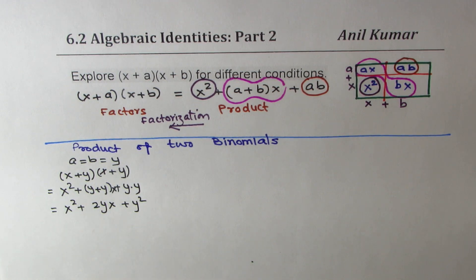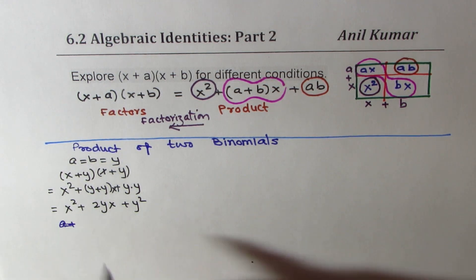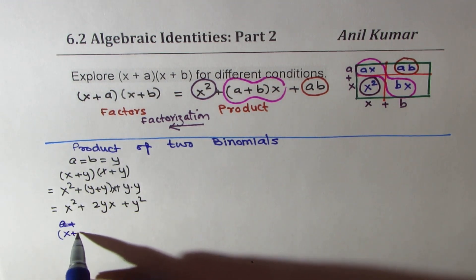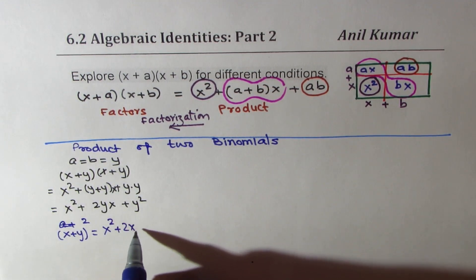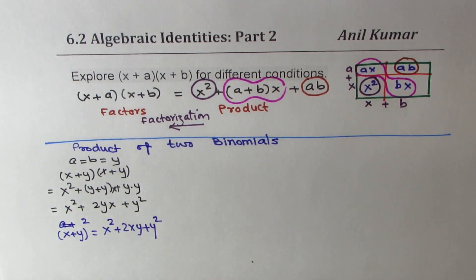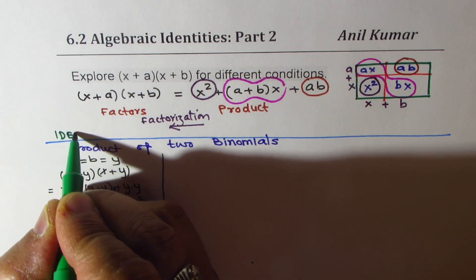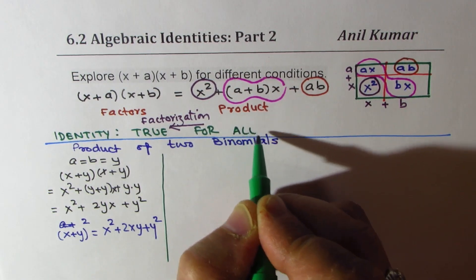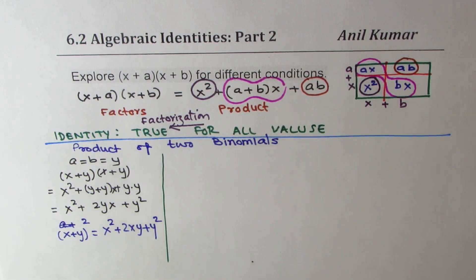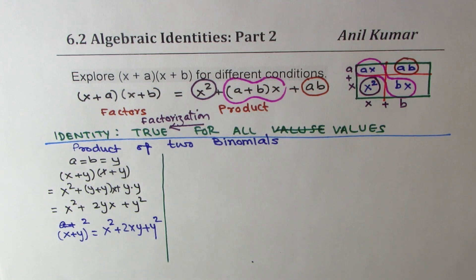So what we get here is another very important identity. x plus y whole square is equals to x squared plus 2xy plus y squared. Do you see that? So we have derived another identity from the one we are working with. Now, when I say identity, it means what? When I say identity, it means true for all. True for all values, that is what it means.